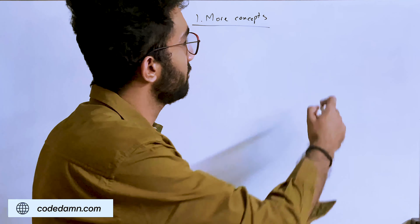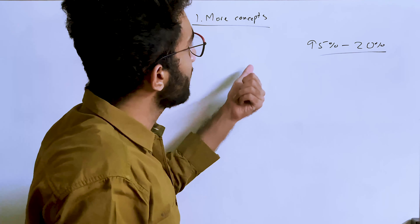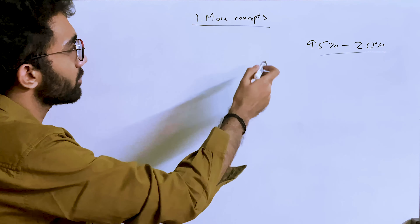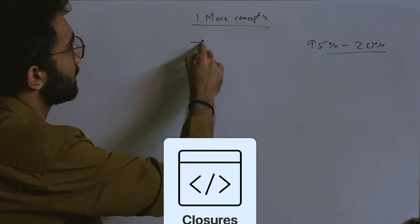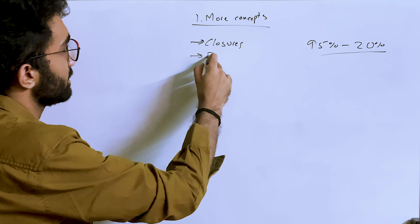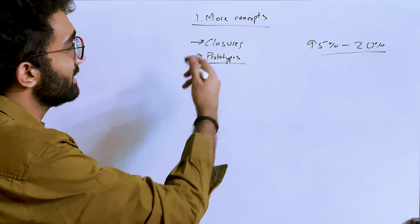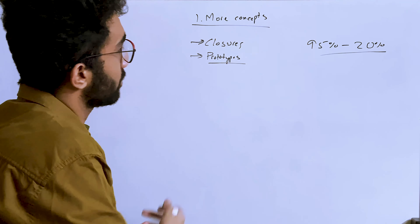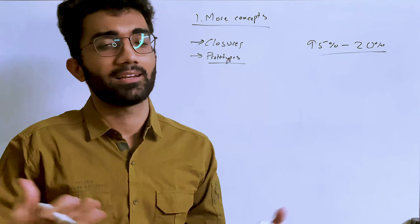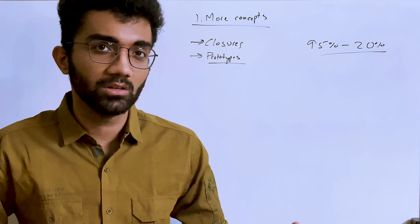Some important language concepts many people miss: closures in JavaScript — you might be using these all the time, but they're an important part of the language. Another is prototypes in JavaScript — not used as often, so it might be hard to understand, but these are the underlying features of how the language works. You should know them because as an advanced developer you'll be thrown at random pieces of code and need to make some sense of them.